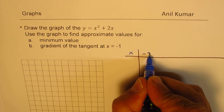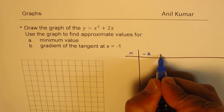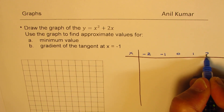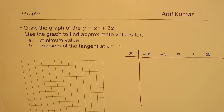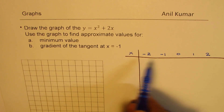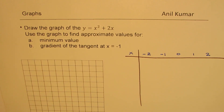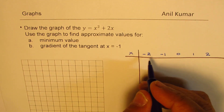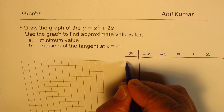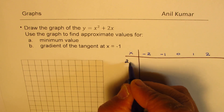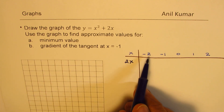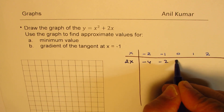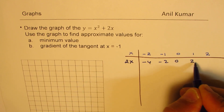So we'll take x values as minus 2, minus 1, 0, 1, and 2. For these x values, we have to calculate what is x squared and what is 2x. Let's calculate 2x first. 2x is just multiplying these by 2, so we get minus 4, minus 2, 0, 2, and 4.